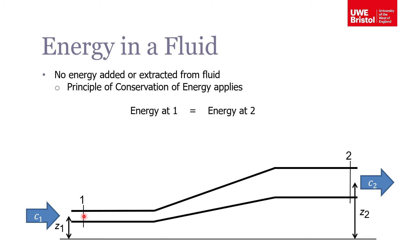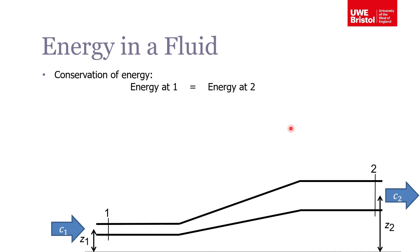If we consider a pipe of some arbitrary cross-sectional area where fluid is flowing from left to right, from plane one to plane two — and in this example the cross-sectional area grows and there's also a change in height as the fluid flows — the fluid is gaining potential energy. We know that the total energy entering at plane one must equal the total energy leaving at plane two, from conservation of energy.